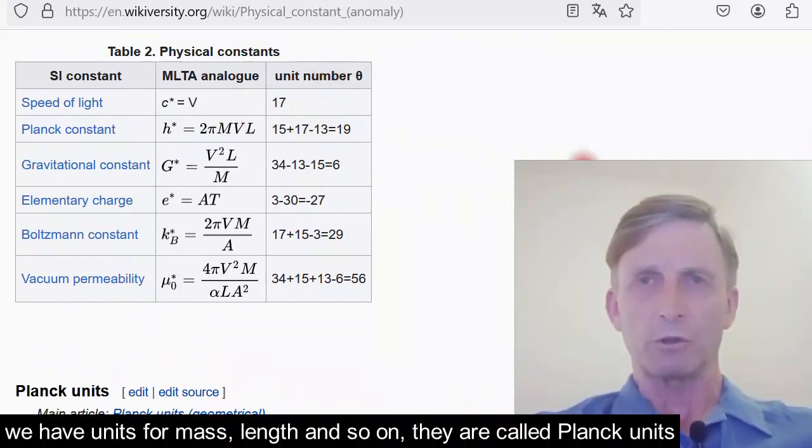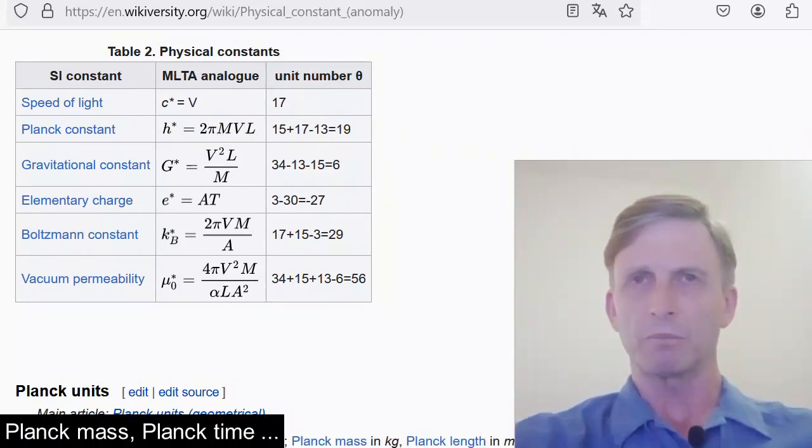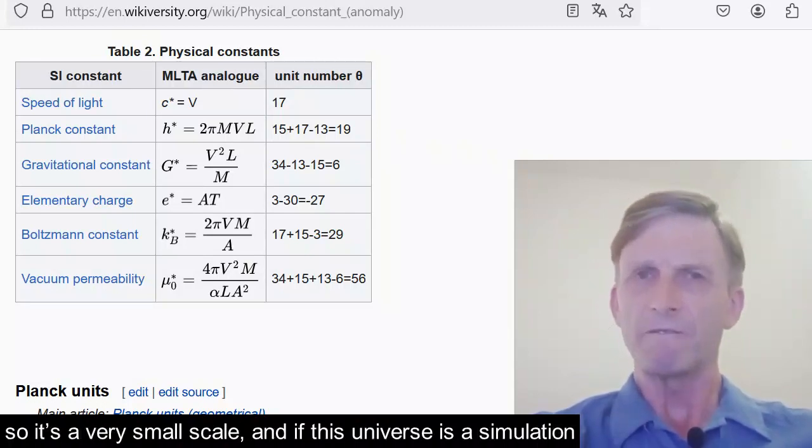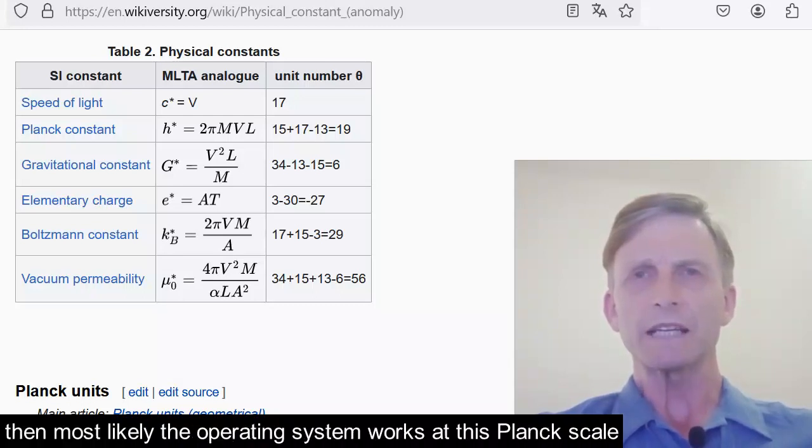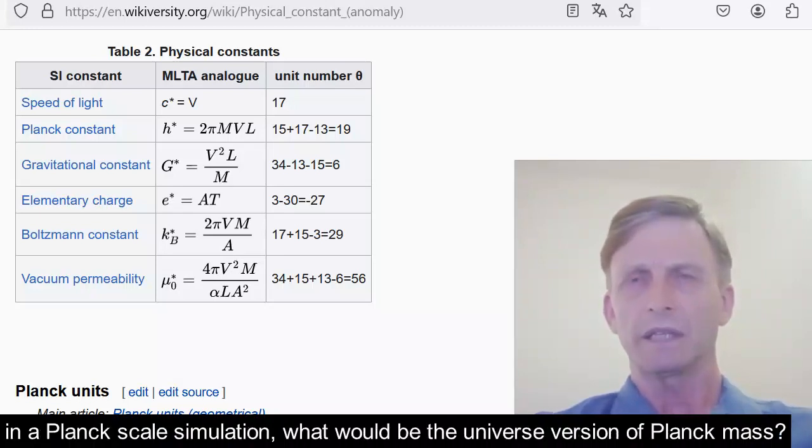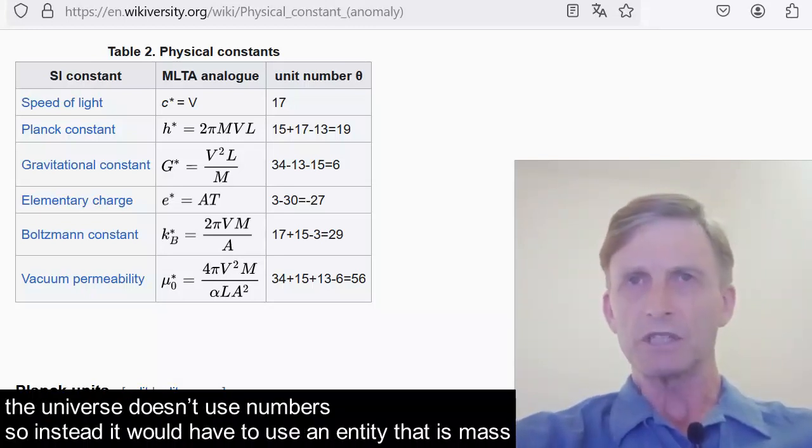We have units for mass, length, and so on; they are called Planck units: Planck mass, Planck time. The Planck scale is to the atom as the atom is to the entire universe, so it's a very small scale. If this universe is a simulation, then most likely the operating system works at this Planck scale. We measure Planck mass using numbers and units; Planck mass is about 22 micrograms. In a Planck scale simulation, what would be the universe version of Planck mass? The universe doesn't use numbers, so instead it would have to use an entity that is mass.